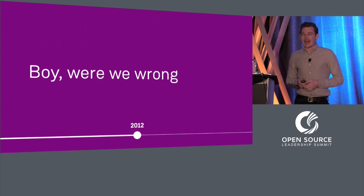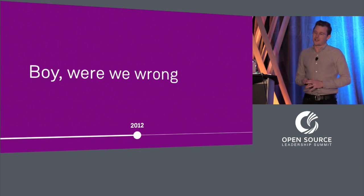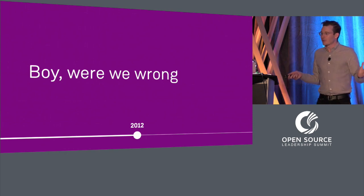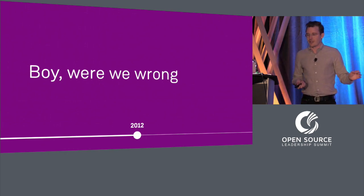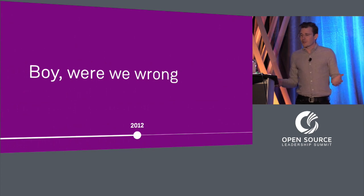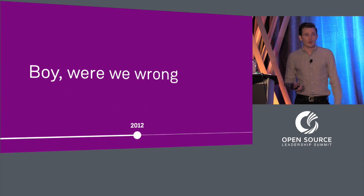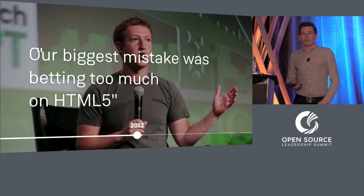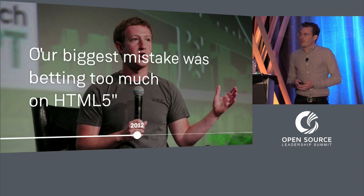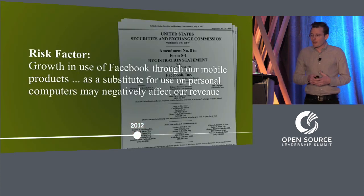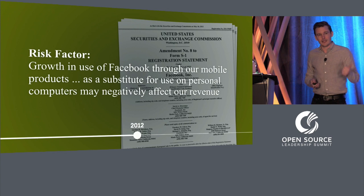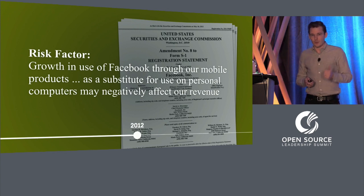Five years later, Apple had placed all of their energy into native apps and had left mobile Safari years behind in web standards. Google hadn't even bothered — the Android browser was slow and buggy, and it wouldn't be another year until we saw Chrome for Android. Mark called our bet on web a mistake. At the same time, it was clear that the transition to mobile devices was happening more rapidly than we anticipated. As we prepared to go public, our S1 filing highlighted this as a risk. We knew that we were in trouble.